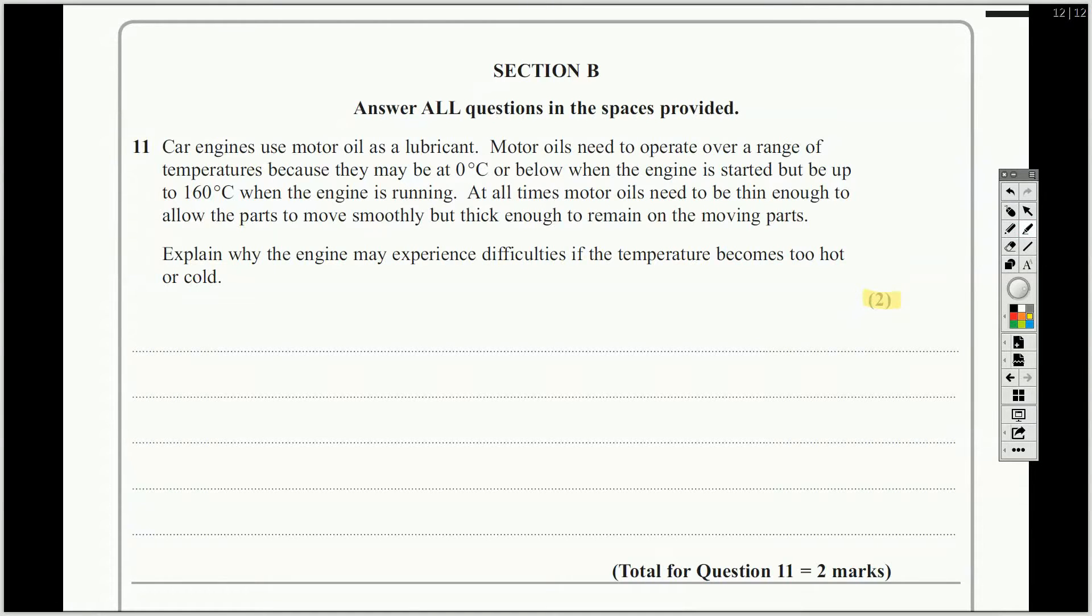Car engines use motor oil as a lubricant, so you've got to think about that in context. Motor oils need to operate over a range of temperatures, it may be at zero degrees or below when the engine started, or up to 160 degrees when the engine is running. At all times, motor oils need to be thin enough to allow the parts to move smoothly, but thick enough to remain on the moving parts. Explain why engines may experience difficulties if the temperature becomes too hot or too cold.